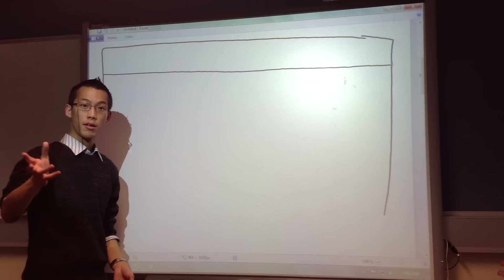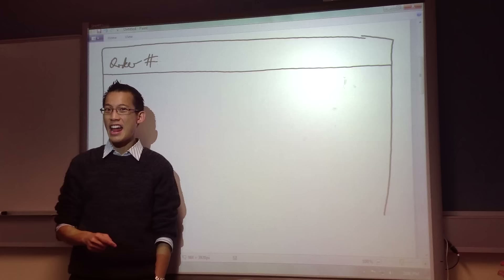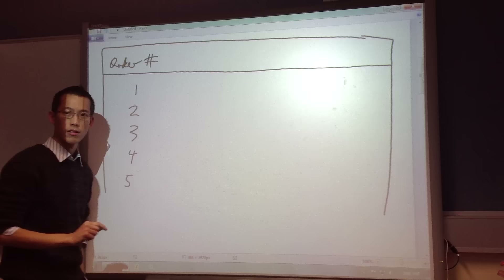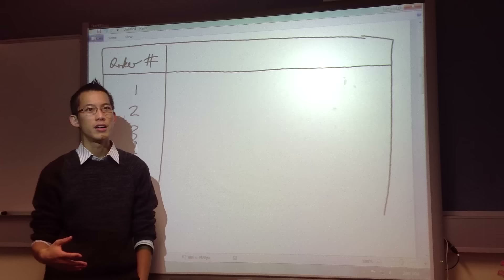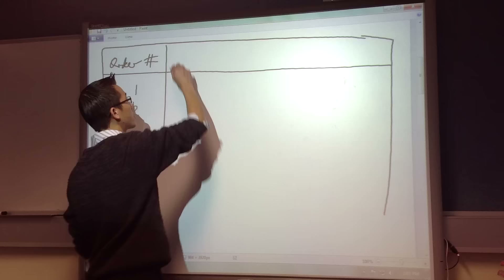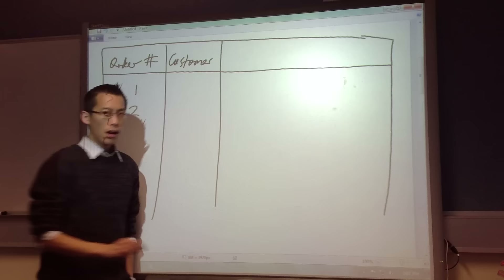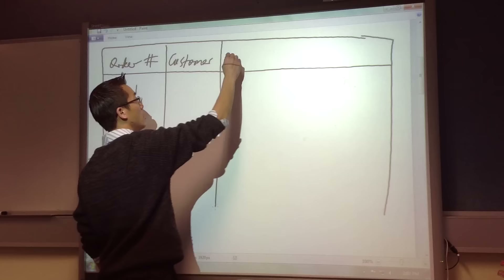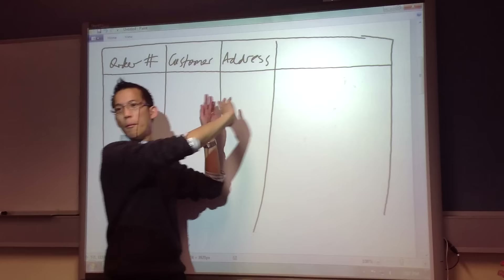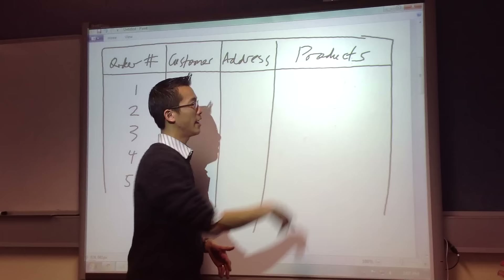I might have an order number — one, two, three, four, five. Not only do I want an order number, I want to know who bought this, so I've got a customer field. I might be an online business, so I need to know where I'm sending stuff — I'll have an address. There are a whole bunch of other fields about the actual products ordered, but I want to focus on this part.